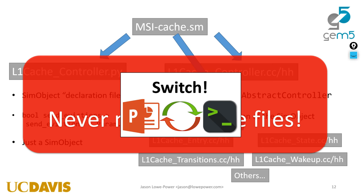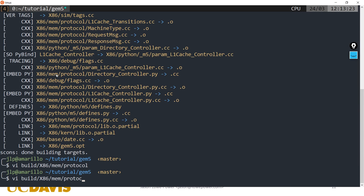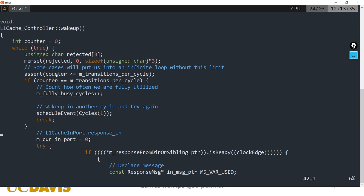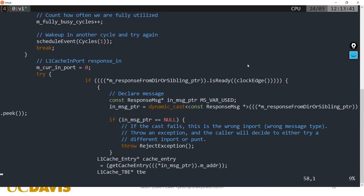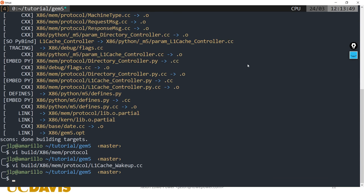There's a question about using Ruby to generate GEM5 code and then continuing to modify those GEM5 files directly. There's no good way to do that, and you wouldn't want to — the generated C++ code is really awful. It has so many parentheses it might as well be Lisp.